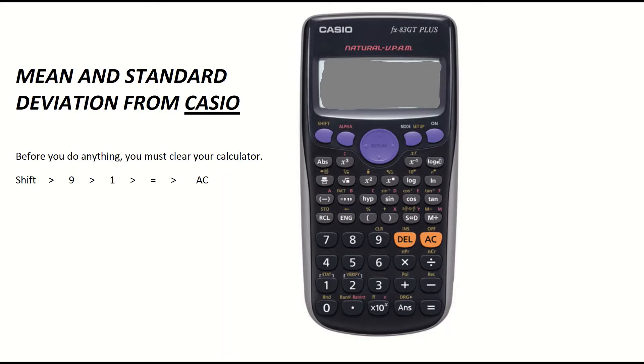First thing you do is press the shift key on your calculator which is located on the top left hand corner. Then you're pressing the 9 key so you're basically following the online instructions. Then you press the 1 followed by equals and then it'll ask you to confirm by pressing the AC button.